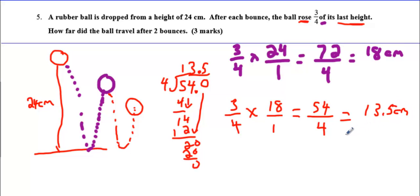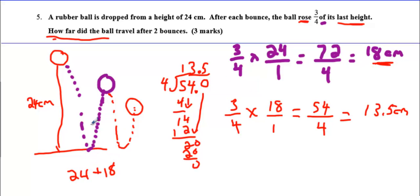Now are we done? We did two bounces, but it asks how far the ball traveled. It started and went down 24, then went up 18, then had to come back down 18, and then went up 13.5. So we add: 24 down, plus 18 up, plus 18 down, plus 13.5 up.